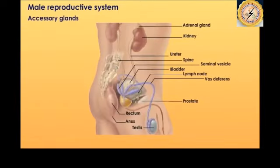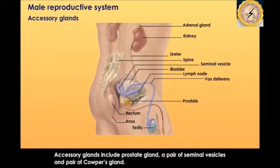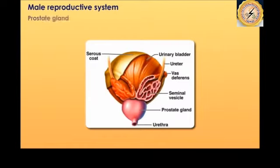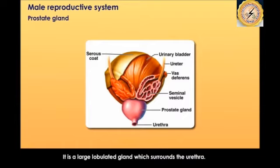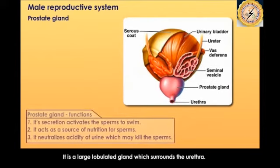The accessory glands include the prostate gland, a pair of seminal vesicles, and a pair of Cowper's glands. The prostate gland is a large lobulated gland that surrounds the urethra. It secretes fluid that activates sperm to swim, acts as a source of nutrition for sperms, and neutralizes the acidity of urine which may kill the sperms.